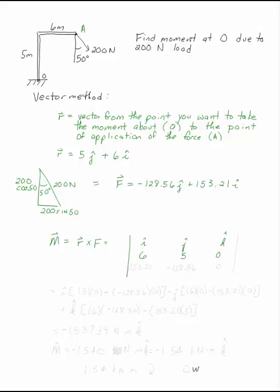The F component goes on the bottom. Minus 128.56j plus 153.21i, and there are no k's. And we can take the cross product.